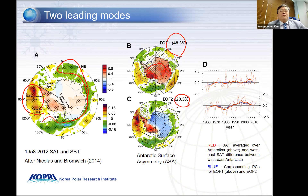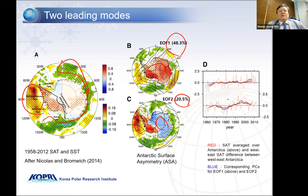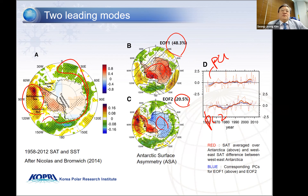For EOF2, the second mode explained variance is 20 percent, and it shows very contrasting west and east temperature, and also some cold anomaly around the Southern Ocean. Panel D shows the corresponding principal component — the blue color is PC1 and the red color is PC2. The red color for PC1 is the average temperature over Antarctica. For PC2, the red color is the temperature difference between west and east, and we overlay with the principal component time series, and it correlates very well.